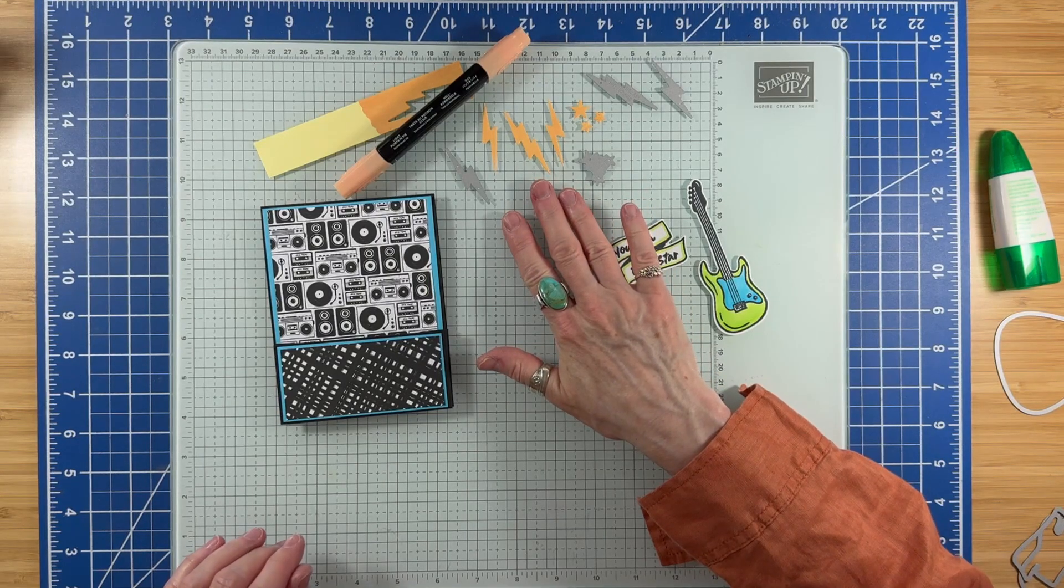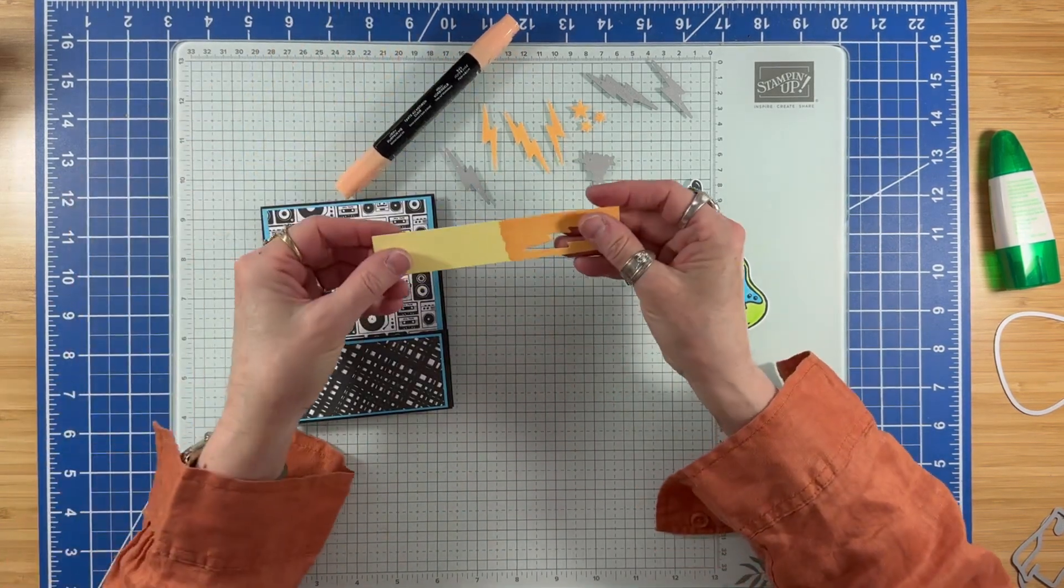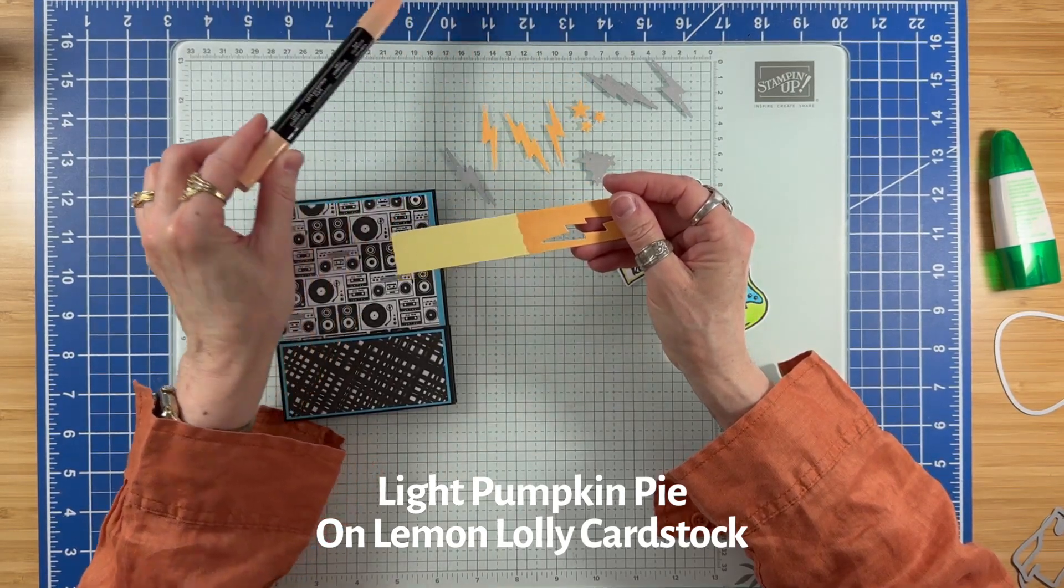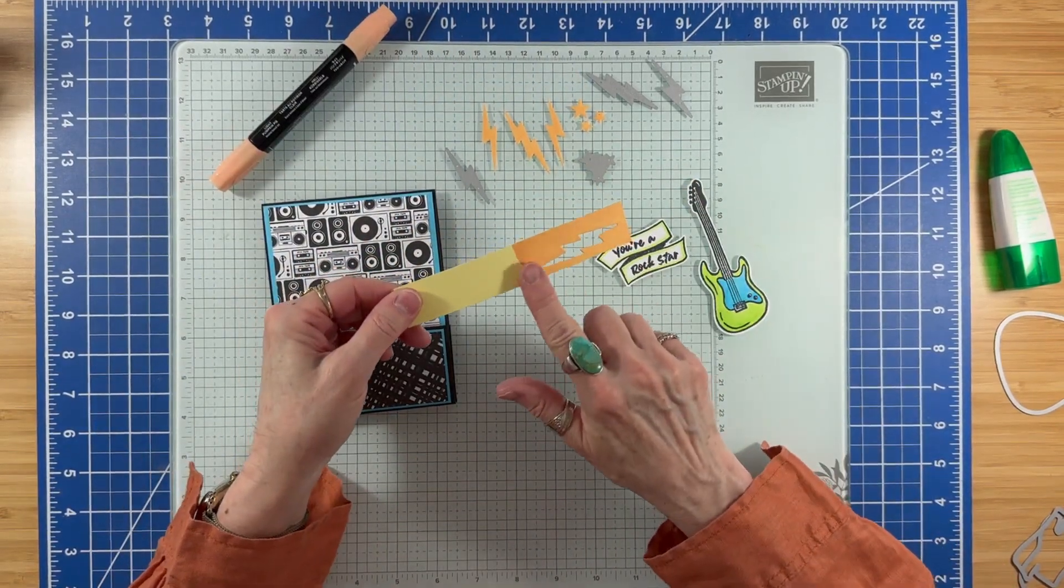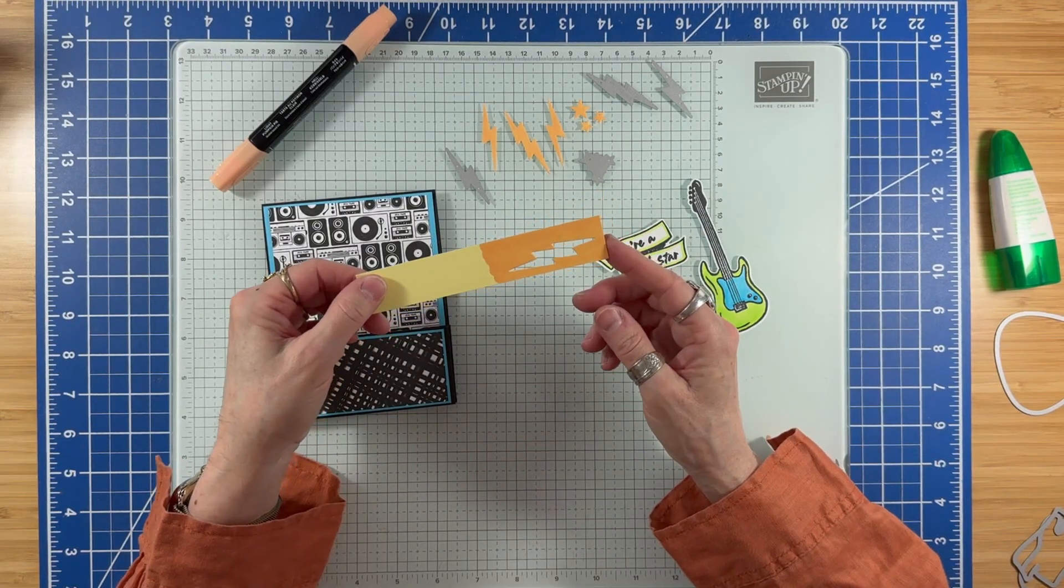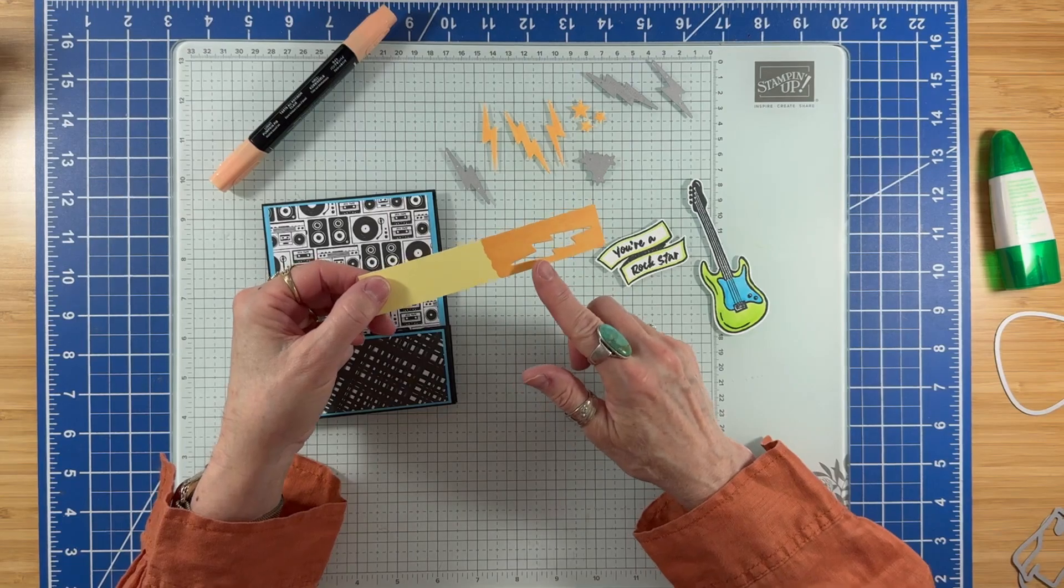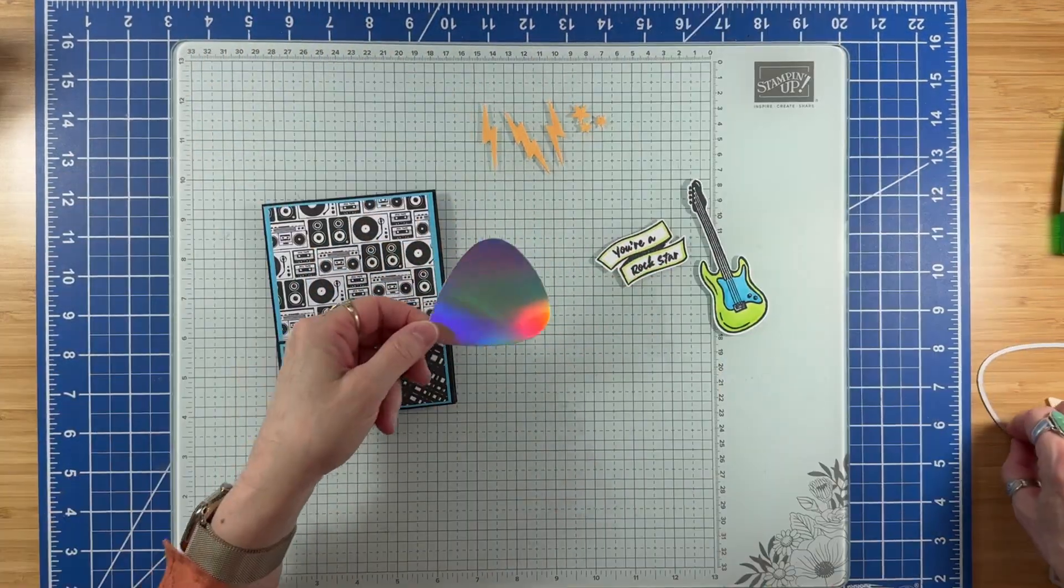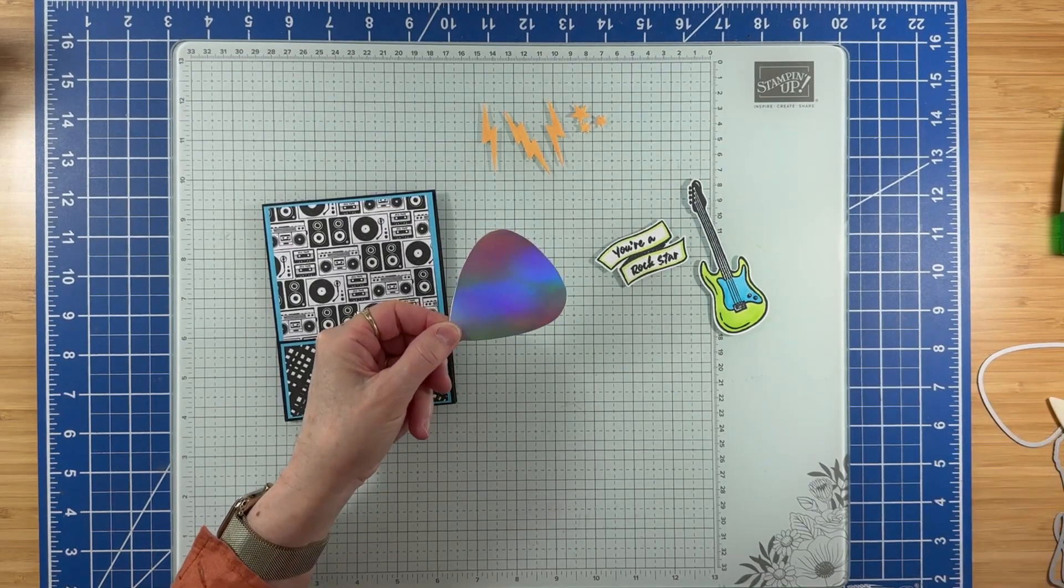I'm also taking the light parakeet party and going around the edges of my sentiment. For my lightning bolts and stars, I took a piece of Lemon Lolly cardstock and colored it with light pumpkin pie to get this beautiful, almost mango melody color. Some of you may remember that's a retired color and I wanted to recreate it. Then I die cut those and also die cut the guitar pick from the holographic paper.